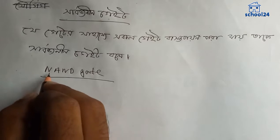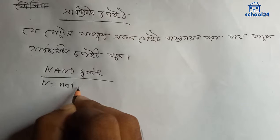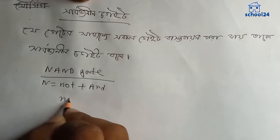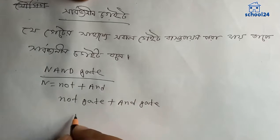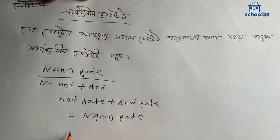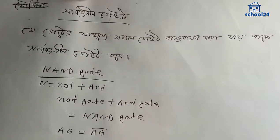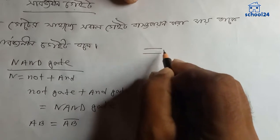ગુણ કરે બી પૂરીત પથિમ — N-gate, NAN gate, NR gate — N-gate cast, N-gate is the symbol to be.